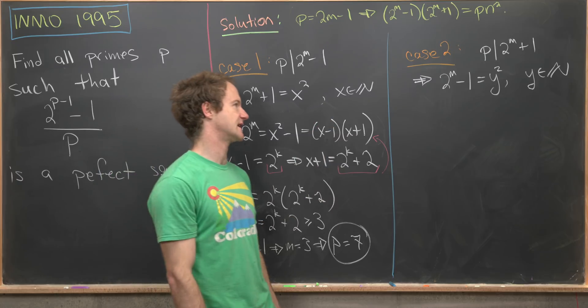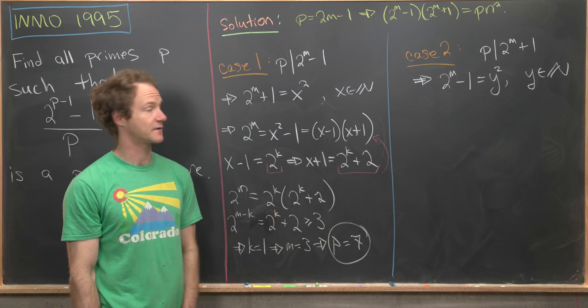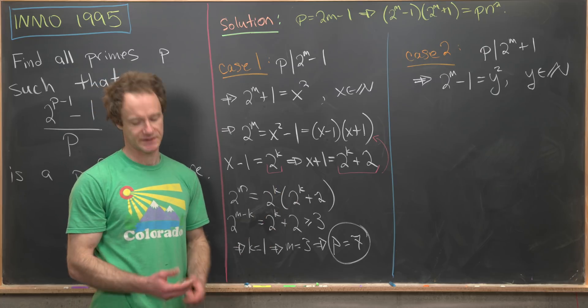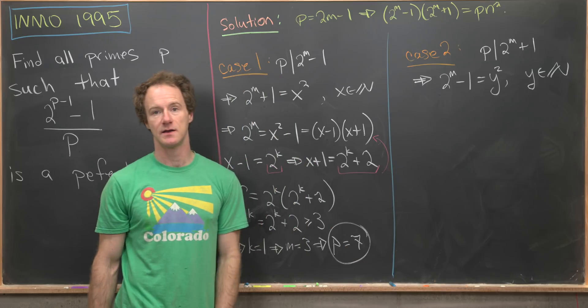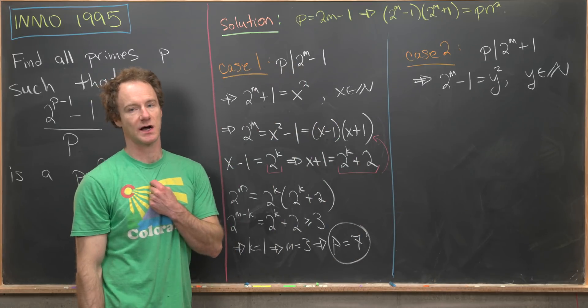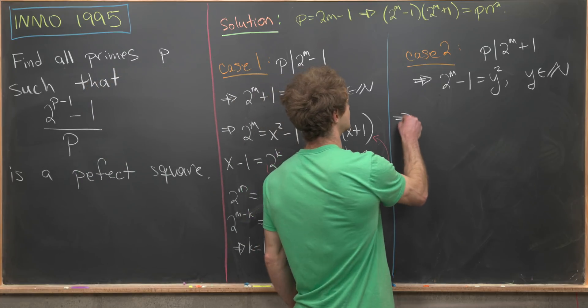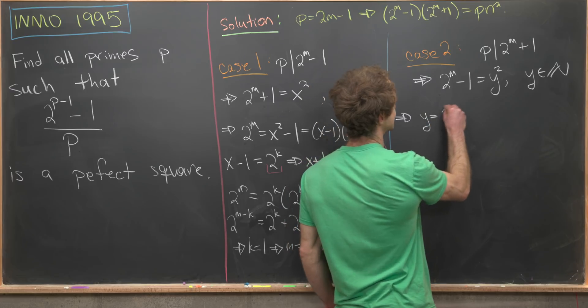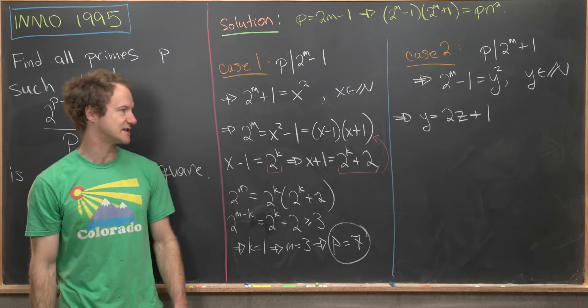Now let's move on to the second case. So we've got 2^m - 1 is a perfect square. In this case, we're calling it y^2. I want to notice that this left-hand side is odd. That means that this right-hand side must also be odd. But if y^2 is odd, that means y is odd. So we'll go ahead and write y as 2z + 1. Like I said, y has to be odd.